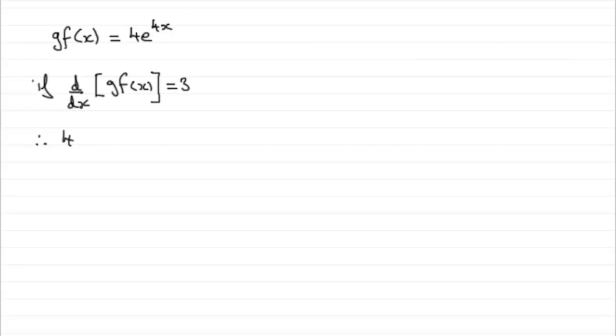What is e to the ax when you differentiate it? Well, it's a result that you should know already. dy by dx always turns out to be ae to the power ax. It's done through the chain rule. If you're not sure of that, just go on my website, you'll find out how to do that. But this is a standard result, one I would encourage you to learn.